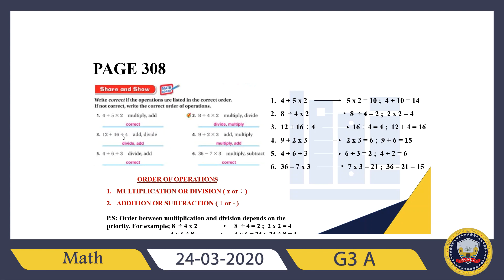Question 3: 12 plus 16 divided by 4 — the given order is addition then division. This is not correct. I need to start with division first, then add. 16 divided by 4 equals 4, then 12 plus 4 equals 16. Answer: 16. The correct order is divide then add.